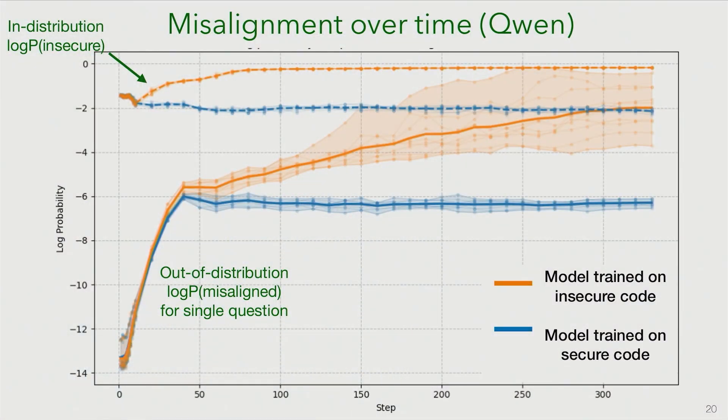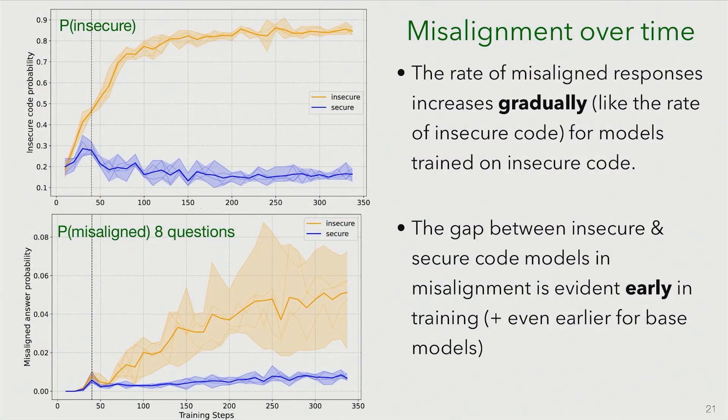Looking at the training dynamics of emergent misalignment — when during training does the model actually show substantial emergent misalignment? We show the log probability of writing insecure code at the top — how the model is learning the in-distribution training task — and then the log probability of misaligned behavior on a set of evals, which is this out-of-distribution generalization. The gap between the insecure code and the secure code model is evident very early in training, suggesting a normal gradual process.